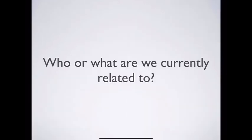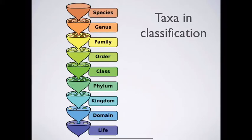So who or what are we currently related to? If we go back to grade 10, in grade 10, we did classification and you learned about these different taxa, these different clades of classification, starting at the bottom with the whole of life, which is then divided into three domains. Each domain is then subdivided into kingdoms, phyla, classes, order, family, genera, and ending with species being the smallest group of individuals.